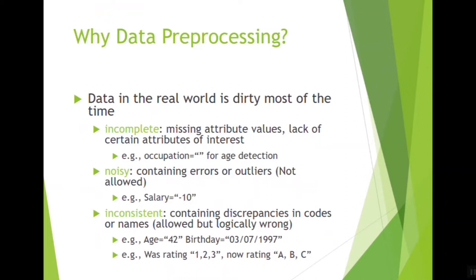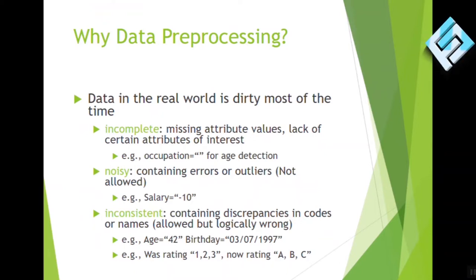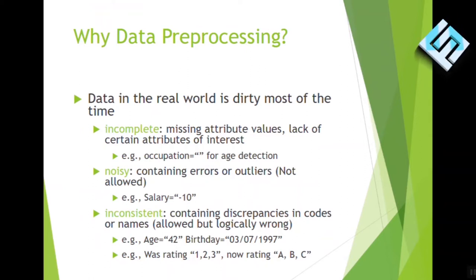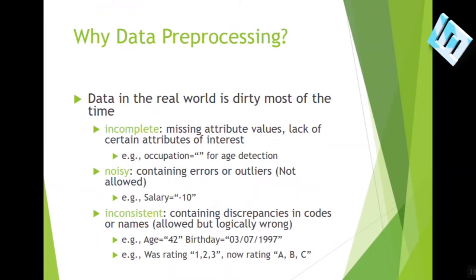Noise data means that some false values are filled. Mistakenly, values are filled that are not correct. For example, if someone's salary is written as minus 10, minus 10 cannot be the value of a salary — that is noise. Inconsistent behavior is when two or more attributes which logically make sense are not written properly.